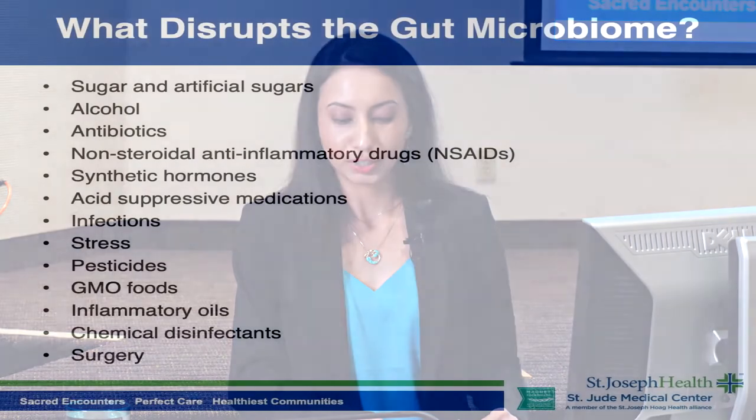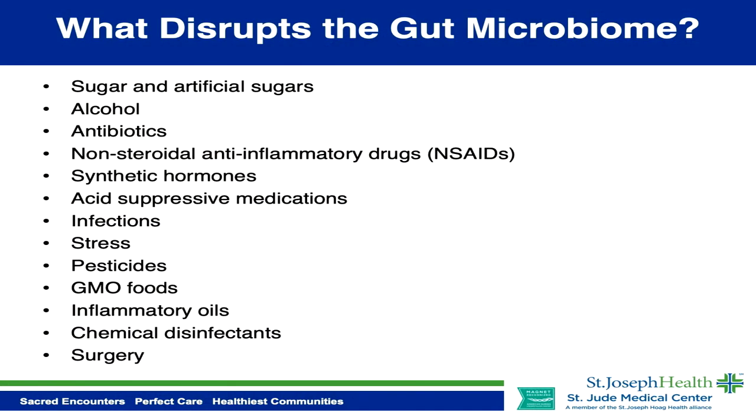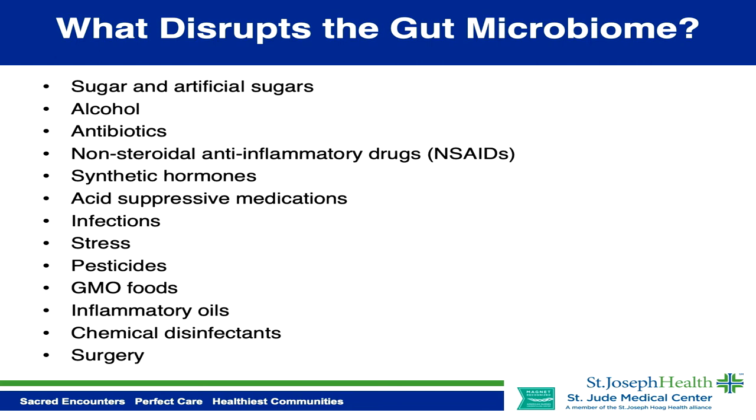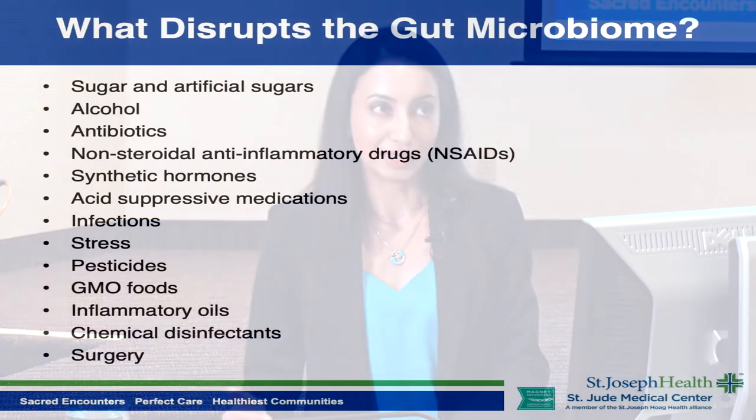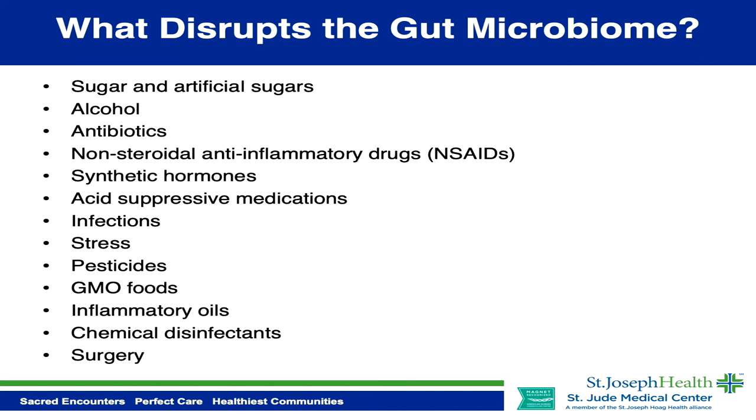Non-steroidal anti-inflammatory drugs — NSAIDs like ibuprofen, Aleve, and naproxen — are very hard on the gut. Interestingly, though they're called anti-inflammatory drugs, they're actually inflammatory on the gut lining. Synthetic hormones, like those in birth control pills, can also affect the gut microbiome — this is why many women gain weight and feel bloated when they start birth control. My preference is to use bioidentical hormones, often prescribed topically for patients with gut or bloating issues so they don't pass through the gut. Long-term use of acid suppressive medications like omeprazole or Prilosec can also change your gut microbiome by altering how you break down proteins.